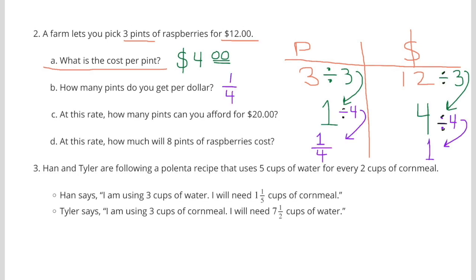B. How many pints do you get per dollar? So I divided the $4 by 4 to get $1. And I divided the 1 pint by 4 to get 1 fourth. For $1, you can get 1 fourth of a pint.